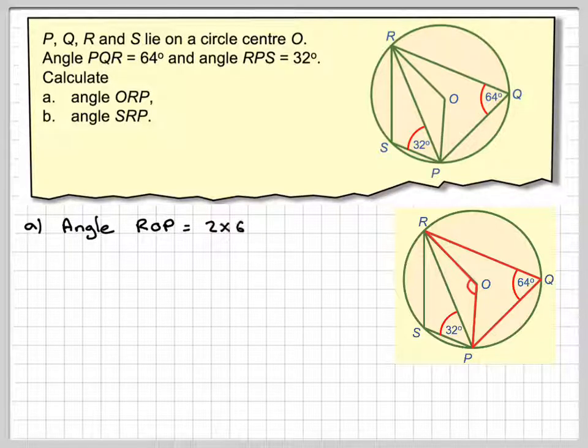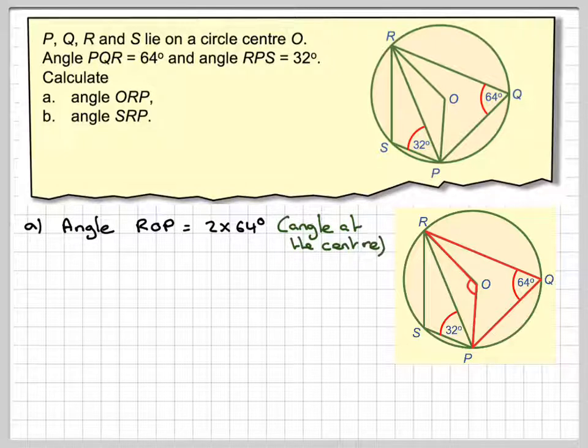So the angle ROP is 2 times 64, which is the angle at the center. It's twice the angle at the circumference, so that's going to be 128. So what can we say about this triangle here?